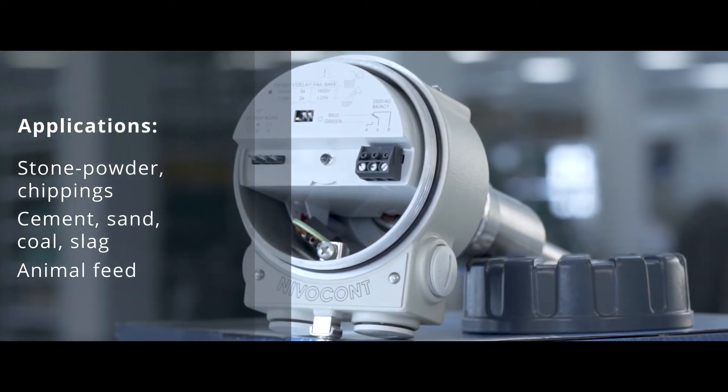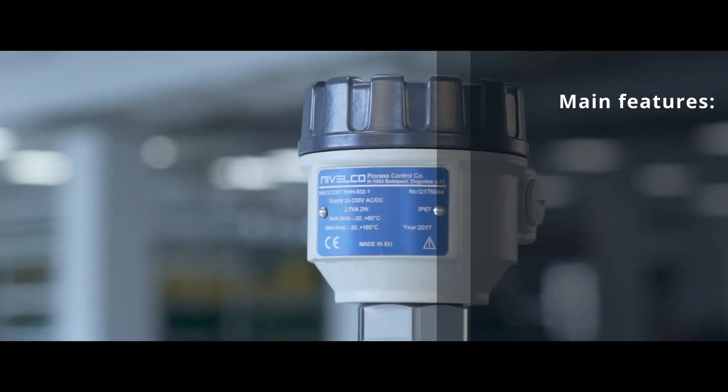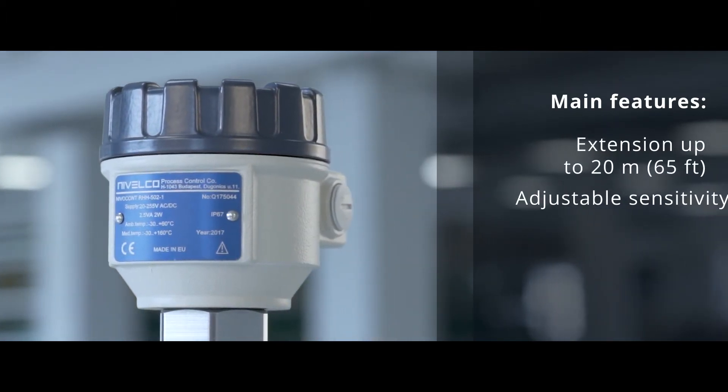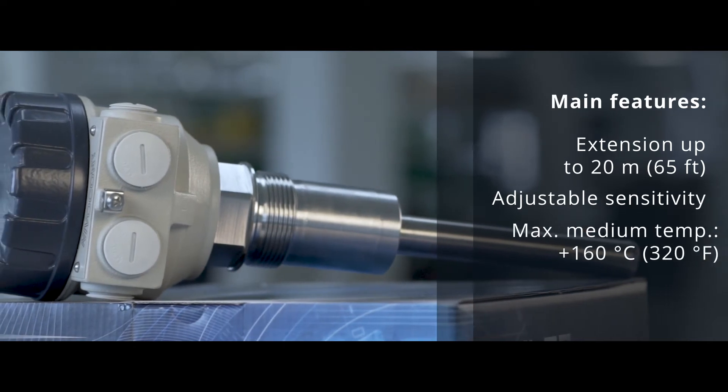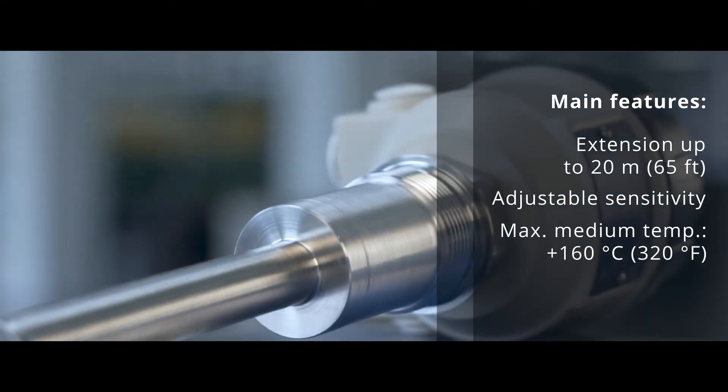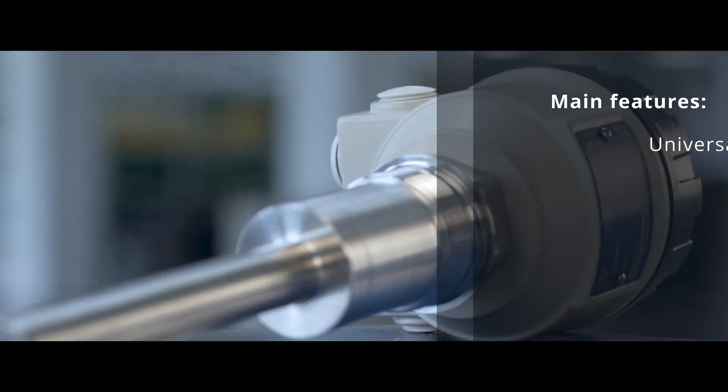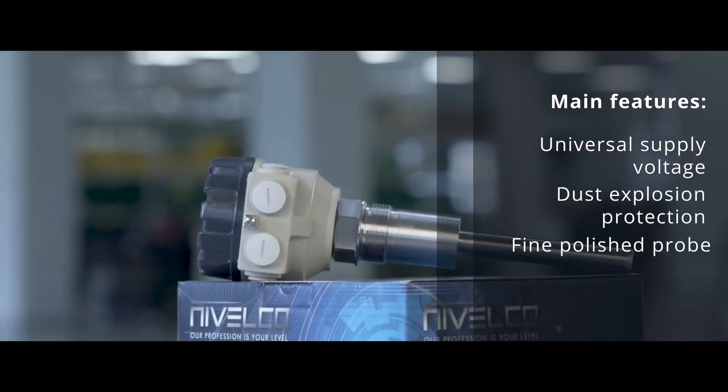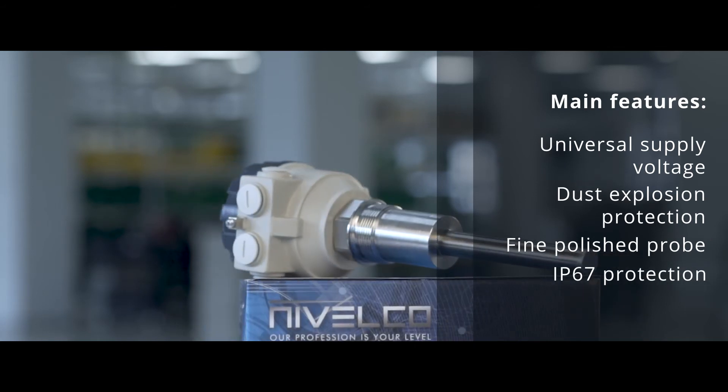Animal feed. The main features of the instrument are the following. Extension up to 20 meters. Adjustable sensitivity. Maximum medium temperature 160 Celsius degrees. Universal supply voltage. Dust explosion protection. Fine polished probe. IP67 protection.